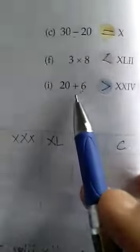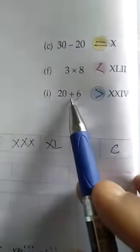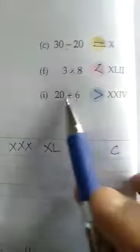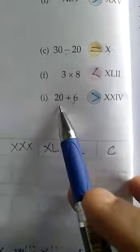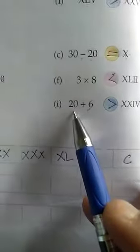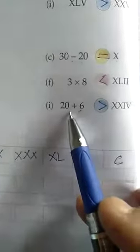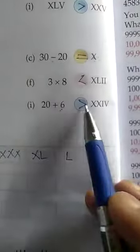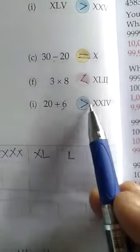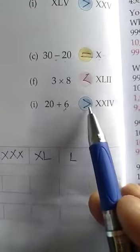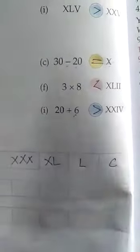Now question number I: 20 plus 6 and XXIV. We will compare these numbers. 20 plus 6 is equal to 26 and this is 24. 26 is greater than 24, so you will write this sign here.